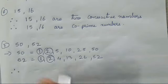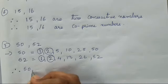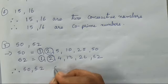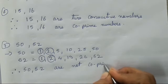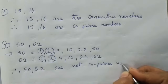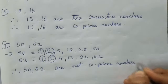Therefore, they have more than 2 factors in common. Therefore, 50 and 52 are not co-prime numbers.